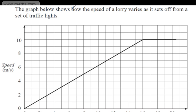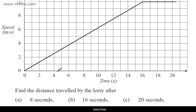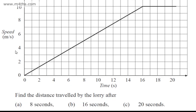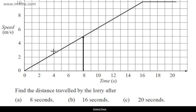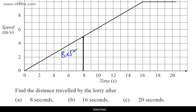The graph below shows how the speed of a lorry varies as it sets off from traffic lights, with time in seconds and speed in metres per second. We're asked for the distance after (A) 8 seconds, (B) 16 seconds, and (C) 20 seconds. After 8 seconds, we have a triangle with base 8 and height 5: 8 × 5 ÷ 2 = 20 metres. So in the first 8 seconds, the lorry has travelled 20 metres.